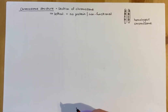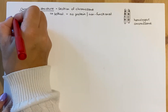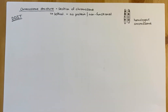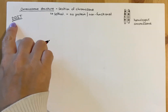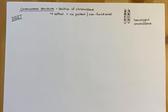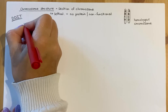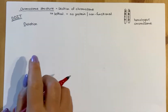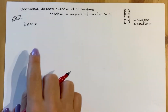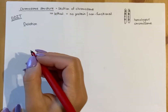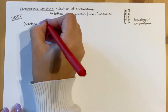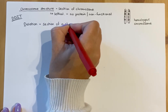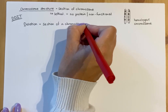A memory trigger for chromosome structure mutations is DDIT. The first D, as with single gene mutations, stands for deletion. However, rather than nucleotides being lost, here a section of a chromosome is lost. The second letter will follow shortly, but for deletion, an entire chromosomal section is removed.